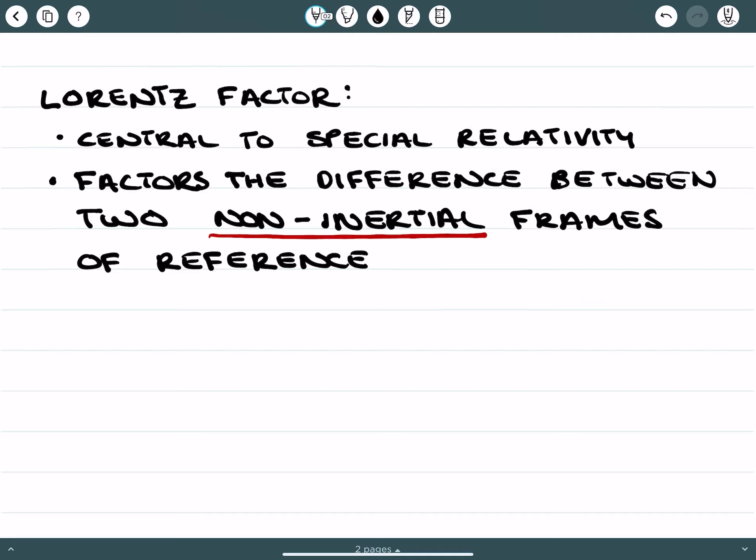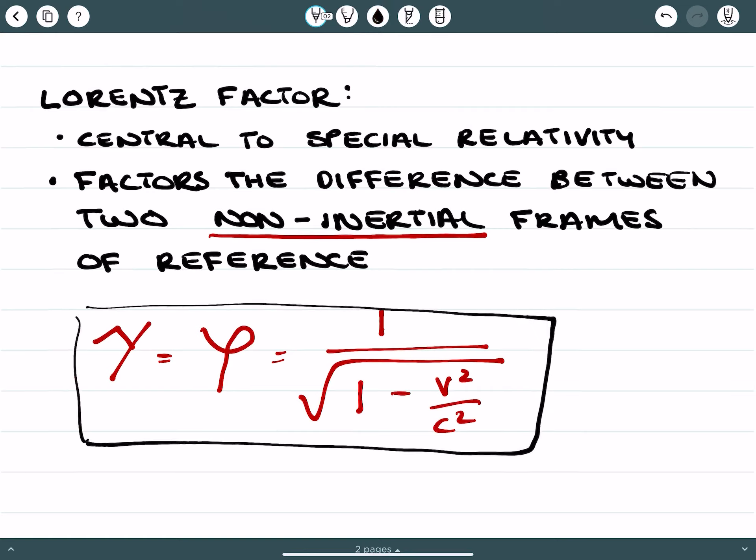Now, what we must remember with the Lorentz Factor, the Lorentz Factor is normally represented like that, sometimes it's represented like something like that, and it's given by 1 on the square root of 1 minus v squared over c squared, where c squared is obviously the speed of light and v is given as the velocity of one of the moving frames of reference compared to the other one.